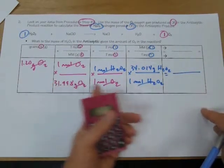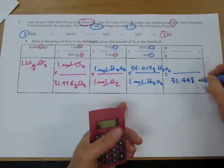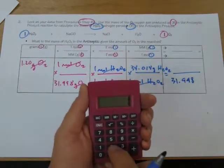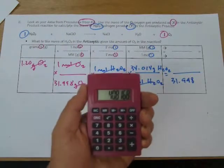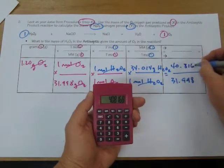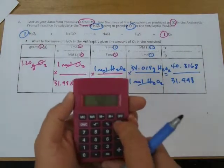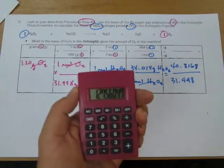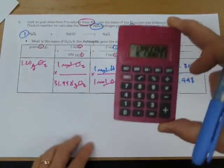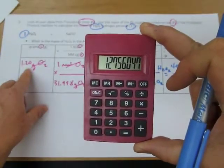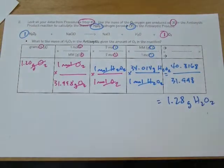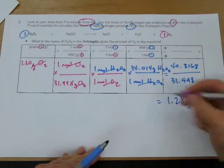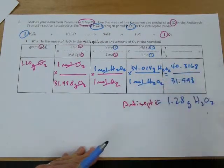Multiplying across the bottom gives 31.998. Multiplying across the top: 1.20 × 1 × 1 × 34.014 = 40.8168. Dividing top by bottom and rounding to three significant figures gives 1.28 grams of hydrogen peroxide. That's how much was in the antiseptic product. Now we'll do the same calculation for the laundry product.